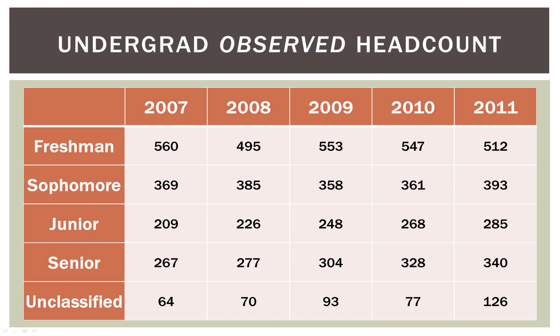Here is our contingency table for our data. Along the top we have the five years, 2007 through 2011, and on the left-hand side we have each grade level: freshman, sophomore, junior, senior, and unclassified. This is the contingency table we will use for our chi-square.